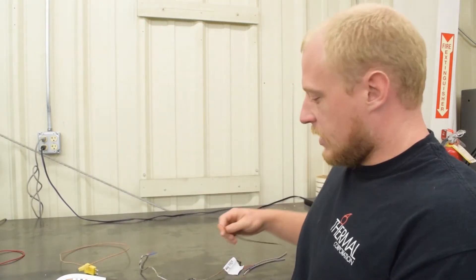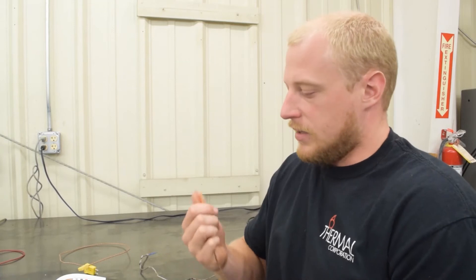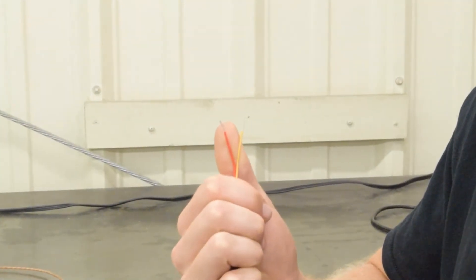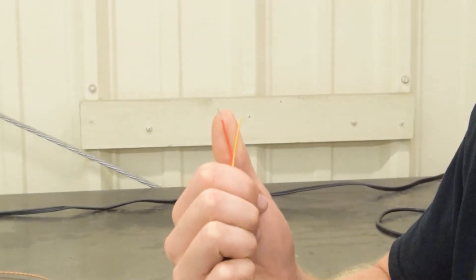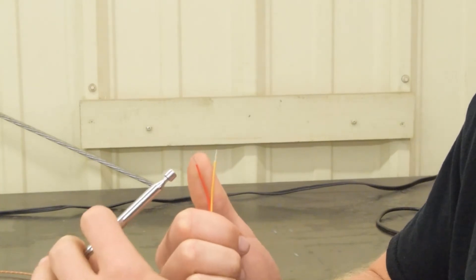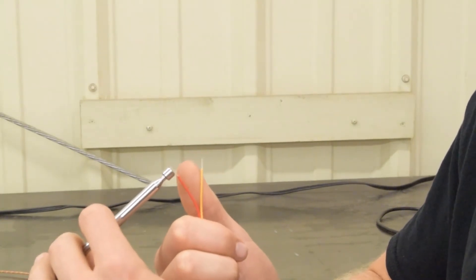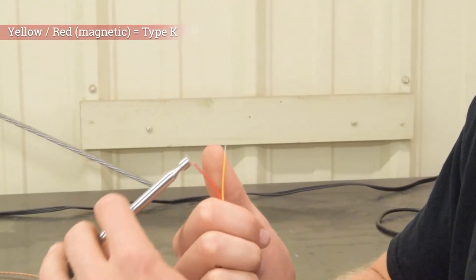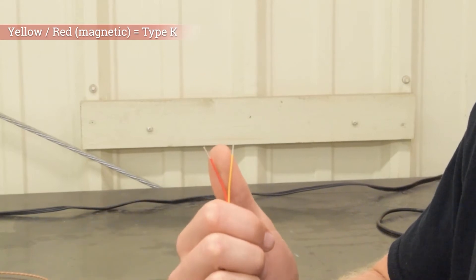Now the other indicator if it doesn't have a plug is lead color. So this is yellow. You can see we have a yellow lead and a red lead here on this thermocouple wire. And the yellow is not magnetic but the red is magnetic. So that is a type K wire and the negative lead or the red lead is magnetic.